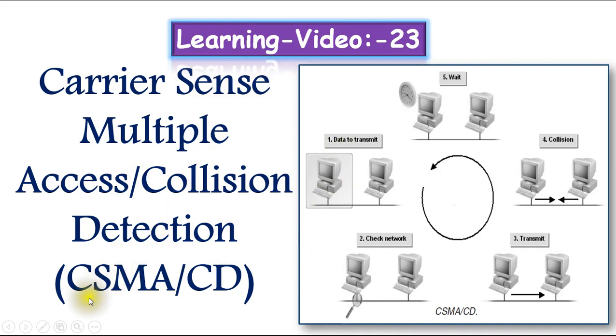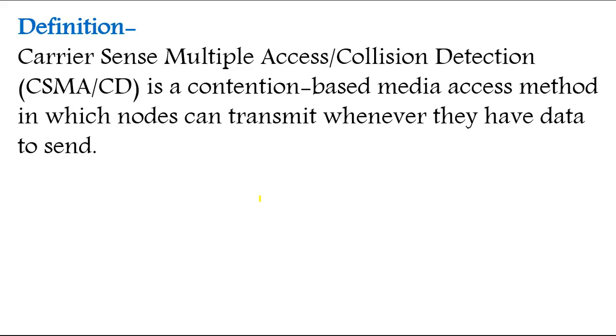I will make it very simple to understand. I hope you will have some benefit from this video. Let me give you an idea about the definition first. Carrier sense multi-access collision detection is a contention-based media access method in which nodes can transmit whenever they have data to send.